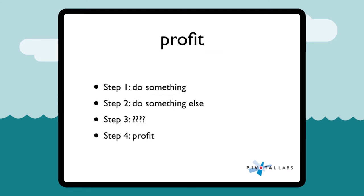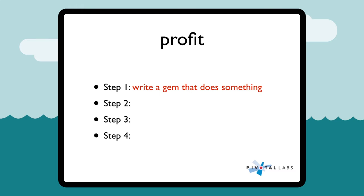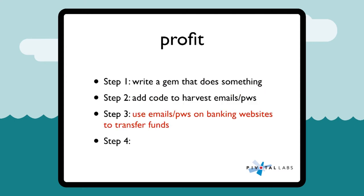There's this internet meme: step one, you do something; step two, you do something else; step three is always question marks - you never know what you're supposed to do there; but step four is always profit. Filling this out with real examples: step one, write a gem that does something; step two, add code to harvest emails and passwords; step three, use those emails and passwords on banking websites to transfer money; step four, profit.